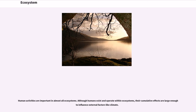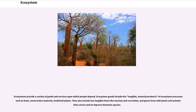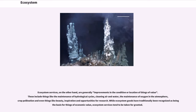Although humans exist and operate within ecosystems, their cumulative effects are large enough to influence external factors like climate. Ecosystems provide a variety of goods and services upon which people depend. Ecosystem goods include tangible, material products of ecosystem processes such as food, construction material and medicinal plants, as well as less tangible items like tourism, recreation, and genes from wild plants and animals that can be used to improve domestic species.